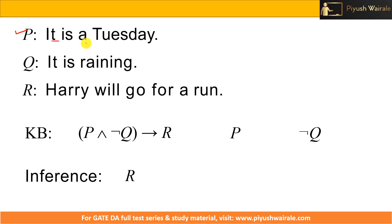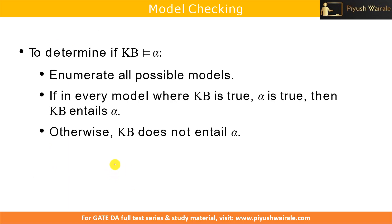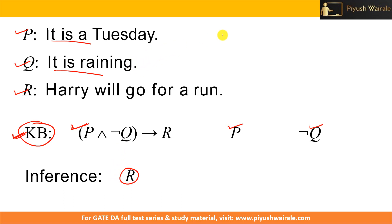Let us take this example: P is 'it is a Tuesday,' Q is 'it is raining today,' and R is 'Harry will go for a run.' This is our knowledge base. The model will assign truth values to these propositions. In the knowledge base we have fed the propositional logic expression: P and negation of Q implies R. It is also present that P is true — it is a Tuesday — and negation of Q is true — it is not raining. We have to infer R from that. For this we use a method called model checking.